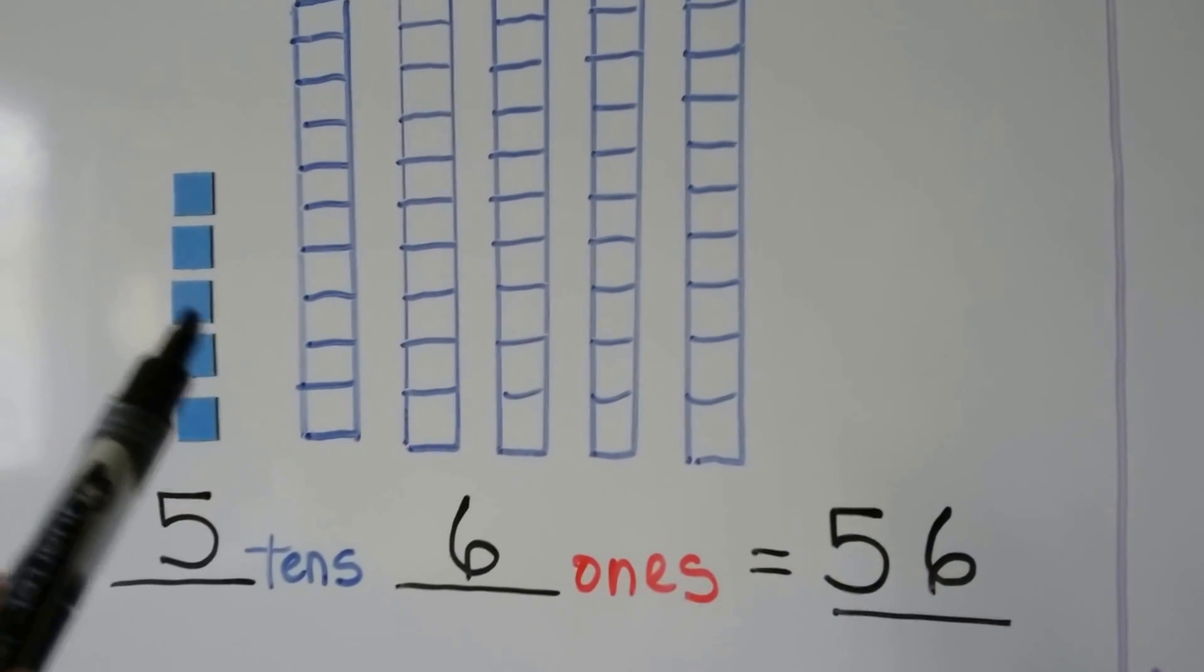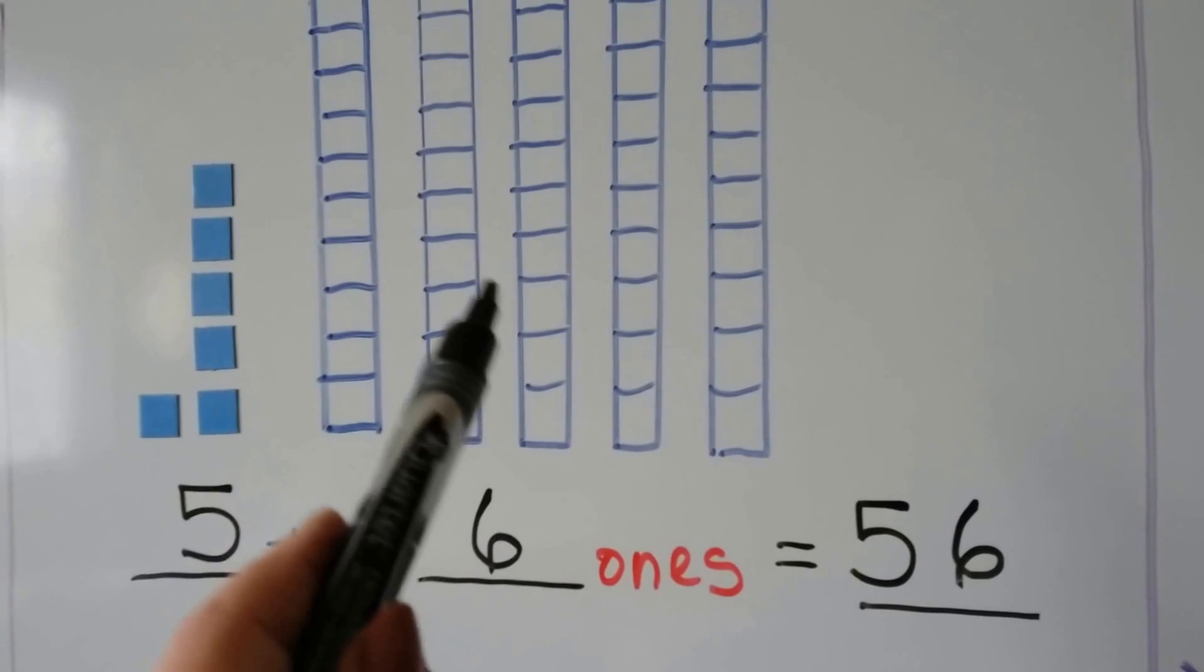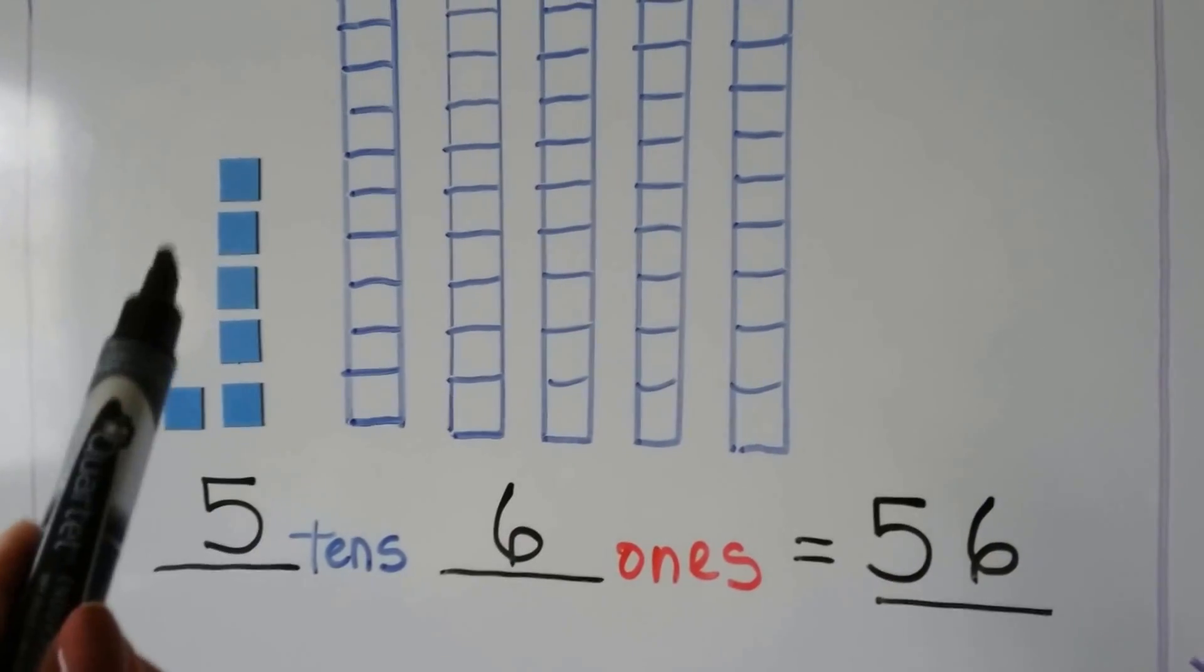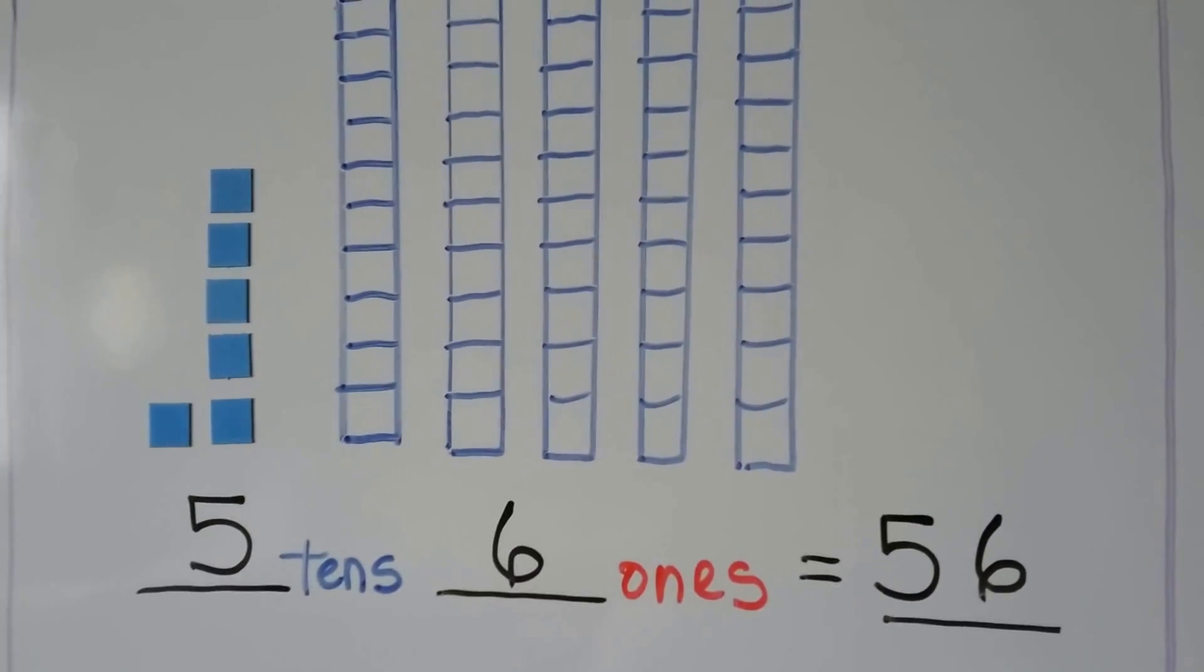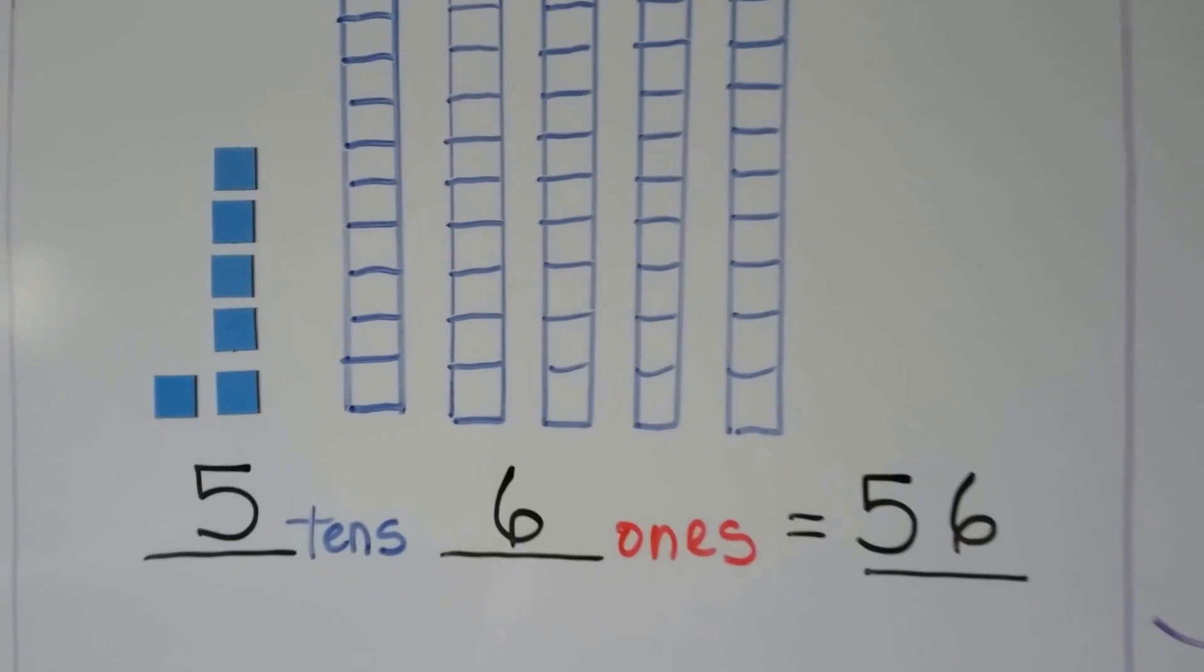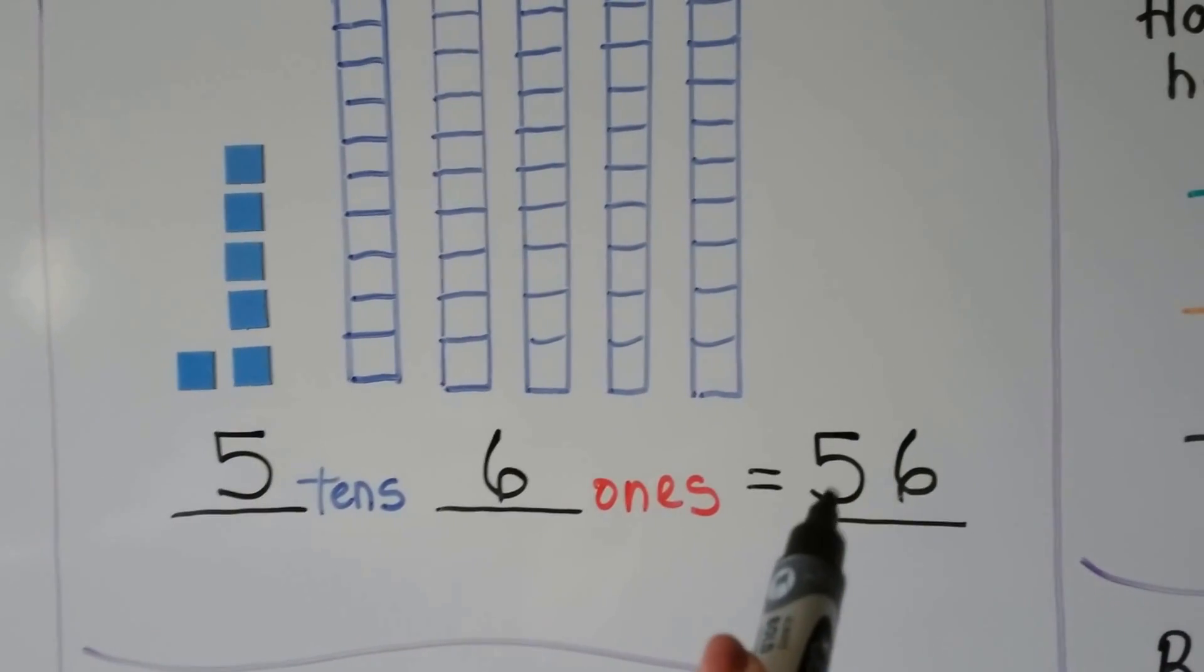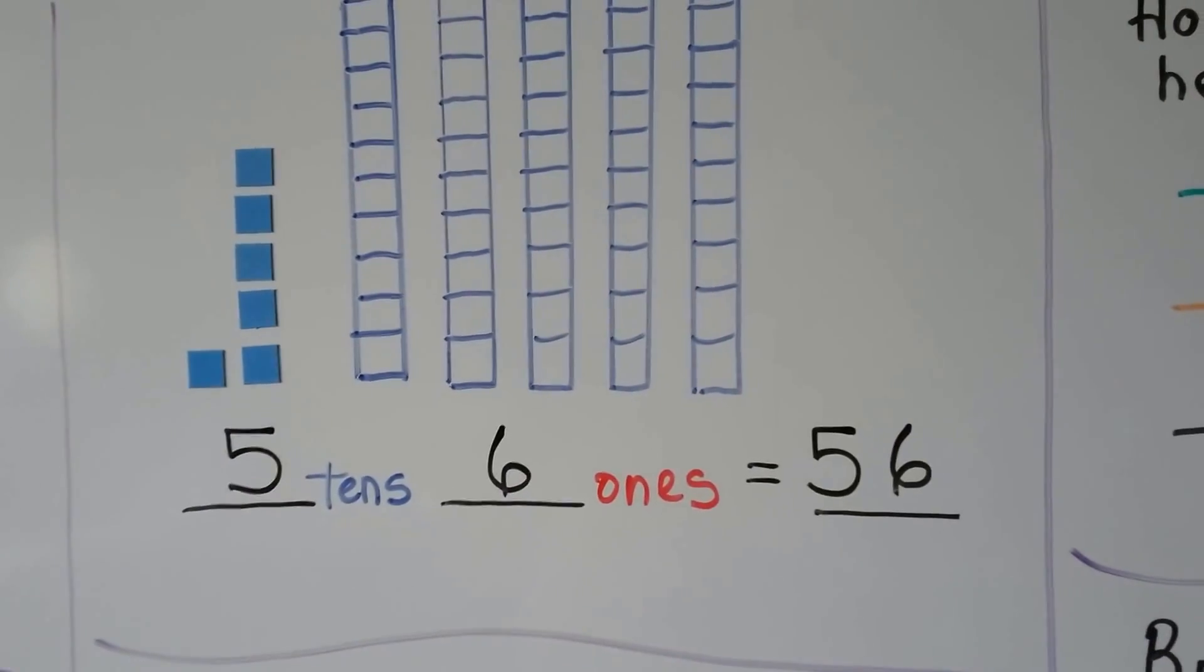So if you see the models where the ones are in the middle, they're on this side or on this side, they're still the ones. We still have to write the tens on this side and the ones on this side.